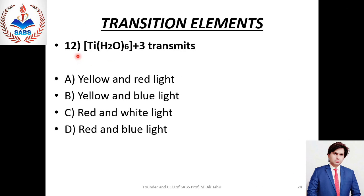Next question No. 12: یہ complex دیا گیا ہے اور یہ بتانا ہے کون سی light کو transmit کرتا ہے۔ یہ complex yellow light کو absorb کرتا ہے اور red اور blue کو transmit کرتا ہے، جن کے ملنے سے violet رنگ بنتا ہے۔ جو دو wavelengths transmit کرتا ہے وہ red اور blue ہیں۔ Right option is Delta.